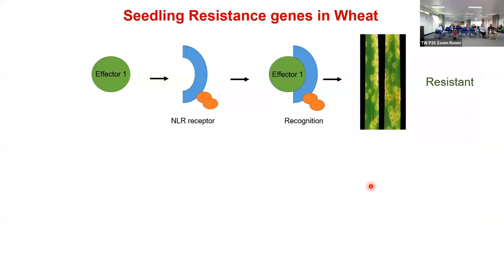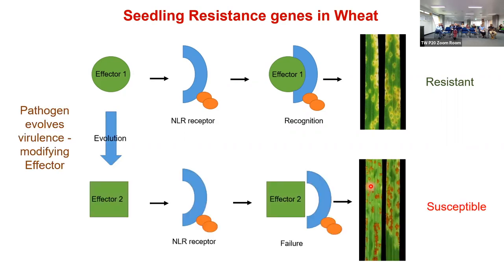When the rust fungus infects plants, it produces millions of molecules called effectors. Plants have resistant proteins that recognise some of these effector molecules, alerting them that an enemy is present. They then sacrifice the infected cell to prevent further spread. Meanwhile, the pathogen tries to evolve new strains with modified effector molecules that may not be recognised by the resistant gene, leading to a susceptible reaction. There is an ongoing arms race: pathogens evolve new effectors, and plants evolve new resistant genes to recognise the modified effectors.